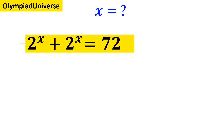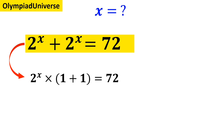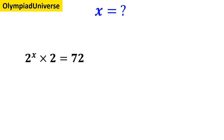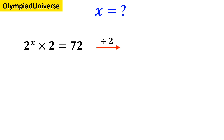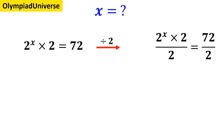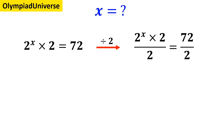First, we'll write this equation as follows: 2 to the power of x times (1 plus 1) equals 72, which simplifies to 2 to the power of x times 2 is equal to 72. Now we divide both sides of the equation by 2, so we get 2 to the power of x times 2 over 2 equals 72 over 2, and it simplifies to 2 to the power of x is equal to 36.